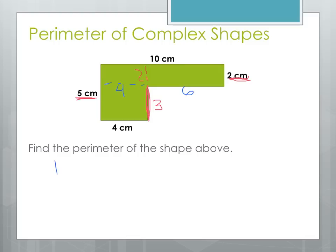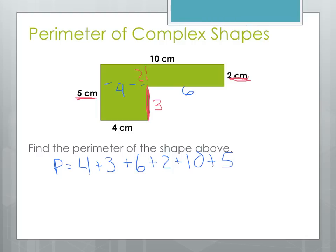Now that we know all the sides, we can find the perimeter by adding all sides together. Starting at one corner and going all the way around the outside edges: 4 plus 3 plus 6 plus 2 plus 10 plus 5. Adding them up: 4 plus 3 is 7, plus 6 is 13, plus 2 is 15, plus 10 is 25, plus another 5 gives us 30. So we have a total perimeter of 30 centimeters. Remember, for perimeter we just use the linear unit — no need to square it.